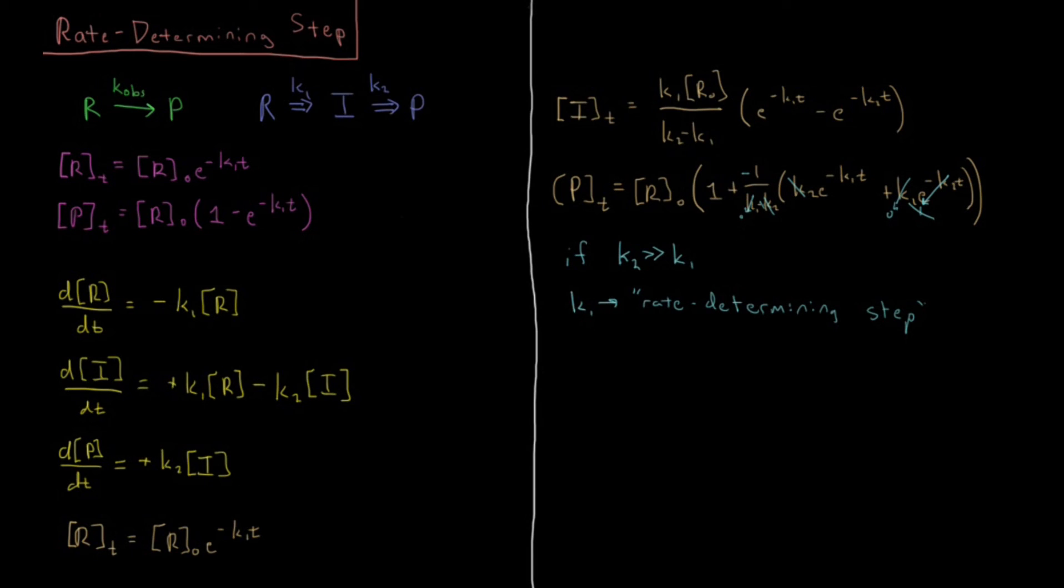So once we collect all of our terms and see what's left over there, what you're going to have is p of t is going to equal, our r0 is going to stay, times our 1 is going to stay. And then we're going to have a minus because we've got a minus sign up there. Our whole second term has gone away because we had a k1 over k2. And when k2 is much bigger, that term is very, very small. It goes to zero. So then we have 1 minus e to the minus k1t.